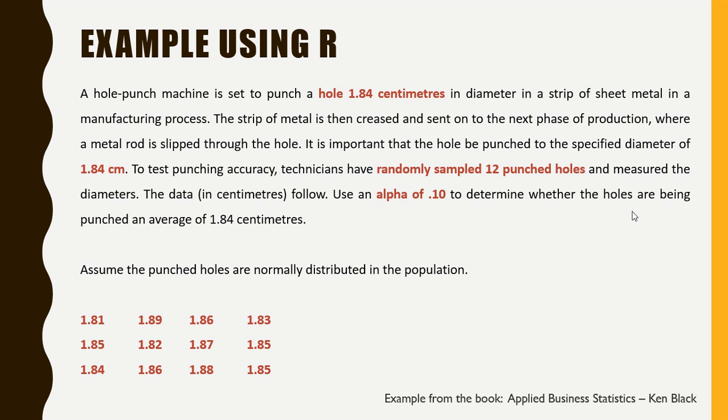Assume that the punched holes are normally distributed in the population. So in this problem we have to test the hypothesis that H0 such that mu equals 1.84 cm against H1 such that mu is not equal to 1.84 cm.